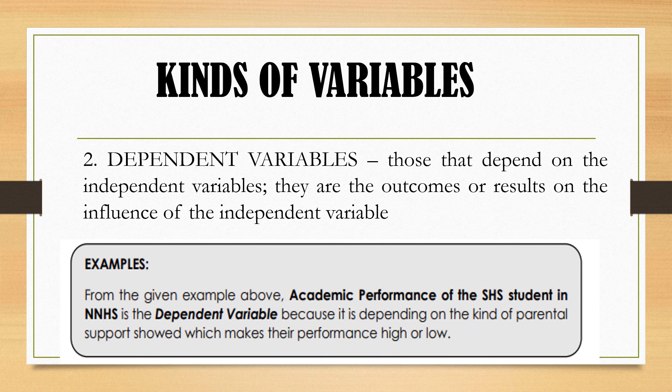Another variable is the dependent variable. Dependent variables depend on the independent variable — they are the outcome or result of the influence of the independent variable. In the given example, the academic performance of senior high school students is the dependent variable, because it depends on the kind of parental support shown, which makes their performance high or low. The grade of the student depends on the support of the parent — the more supportive the parents, the higher the student's grade.